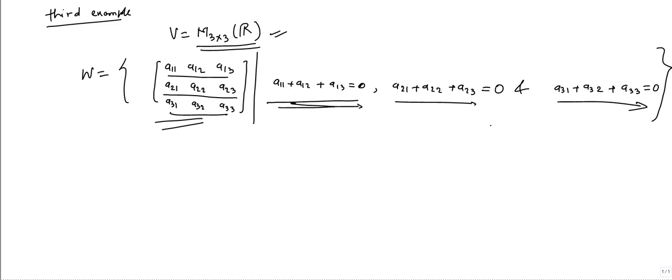Now we need to check is this subset a subspace of this vector space M_3×3 matrices. Again we need to check all three criteria. If W follows that, then W is a subspace.